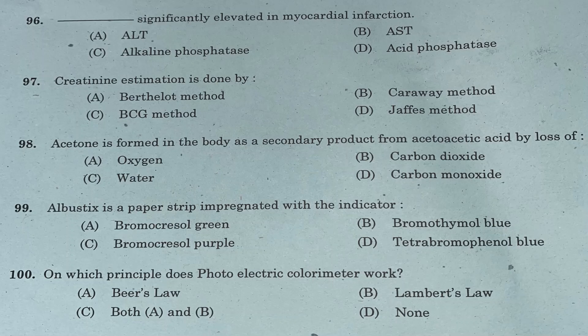Question 96: Which enzyme is significantly elevated in myocardial infarction? Option A: ALT. Option B: AST. Option C: alkaline phosphatase. Option D: acid phosphatase. Answer is Option B, AST.